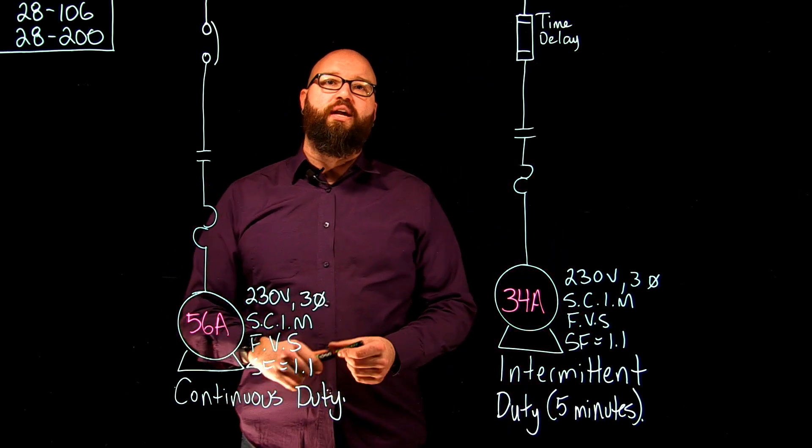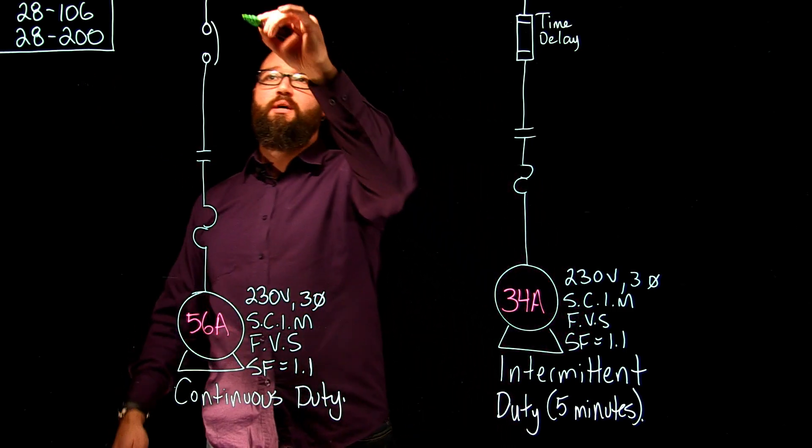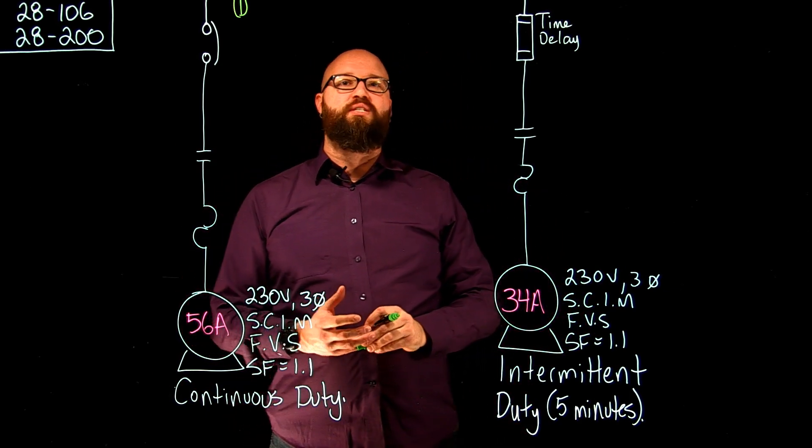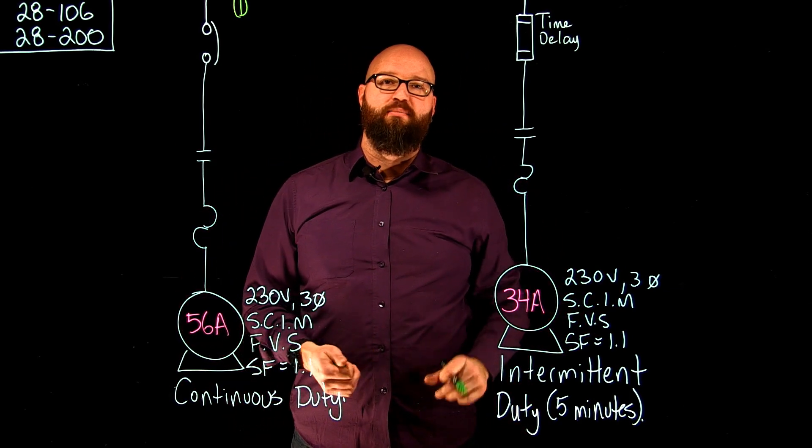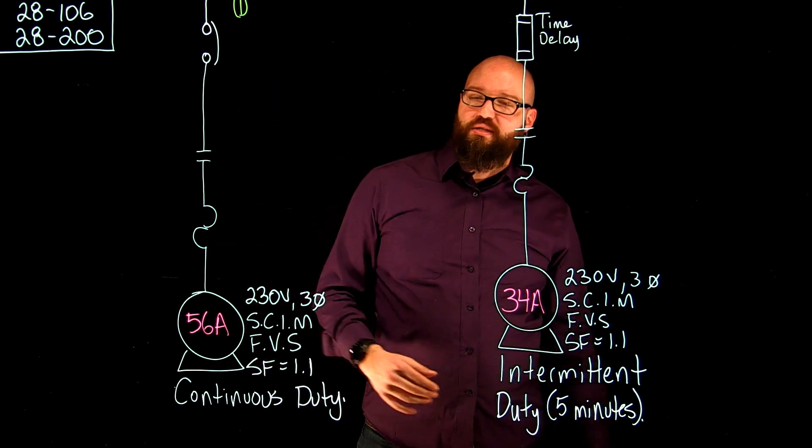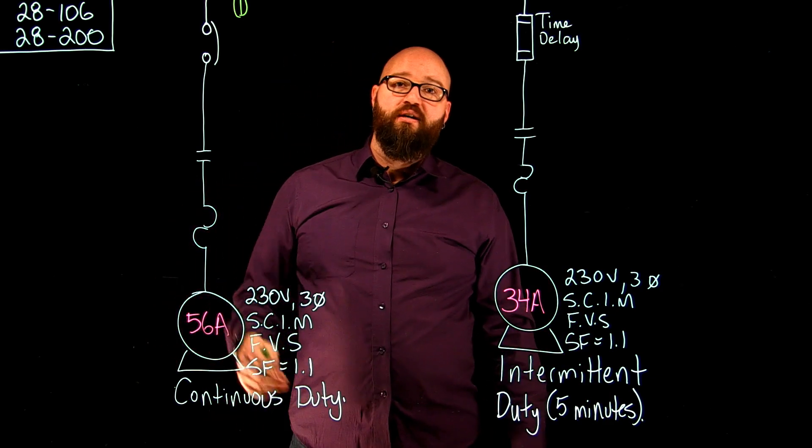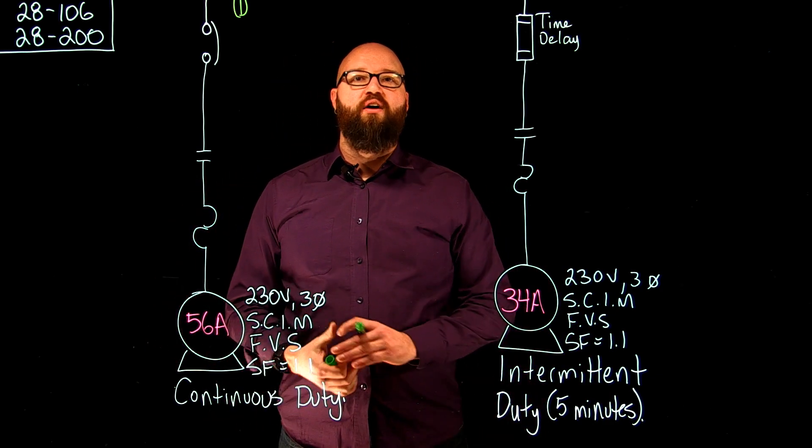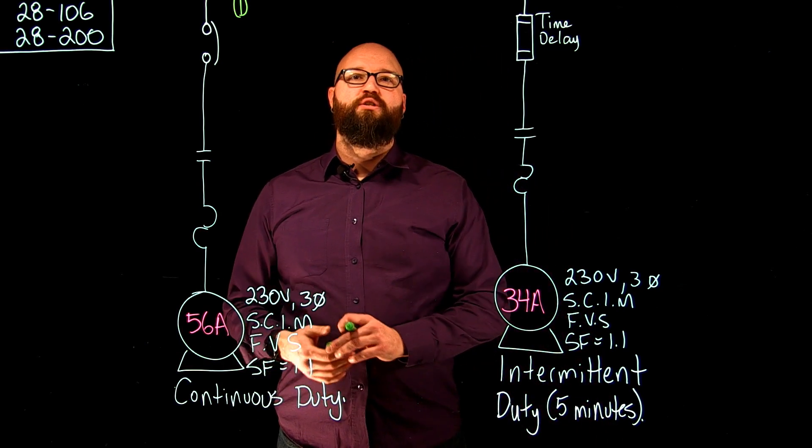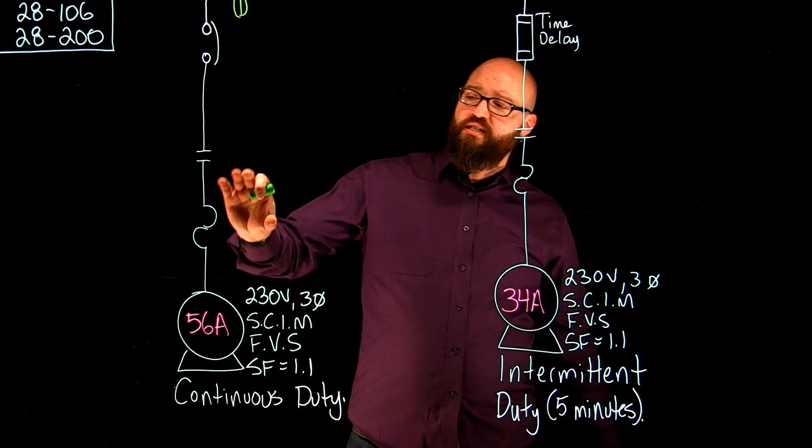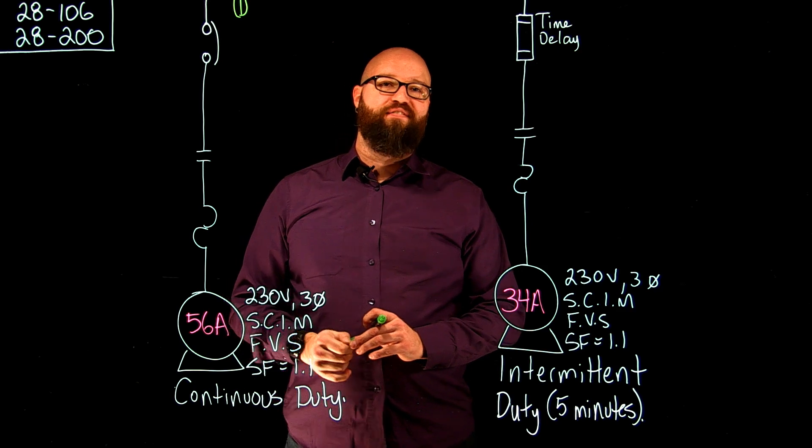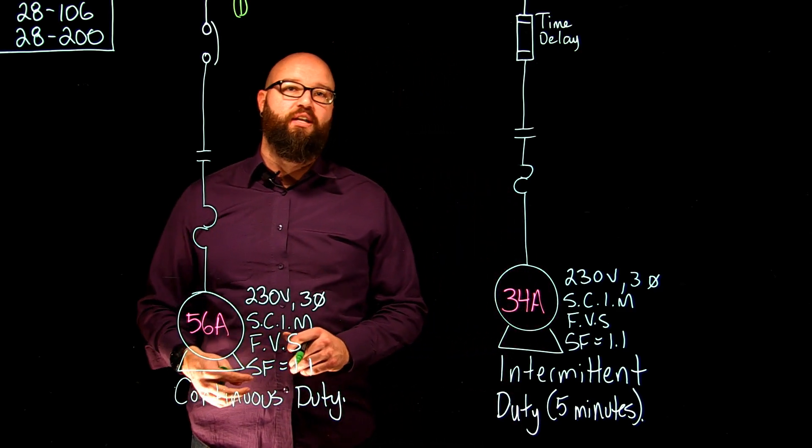So for our first one here, we're going to take a look at 28-106, sub-rule one, which deals with a continuous duty motor. Effectively, what we're saying is this motor is going to be expected to be on all the time, so we're dealt with in sub-rule one. And what it tells me in sub-rule one is I'm going to take the FLA, which is the full load current rating of my motor, what it's going to run at at its maximum load. I'm going to take the FLA and multiply it by 125%. It tells me this branch circuit conductor has to be at least 125% of FLA.